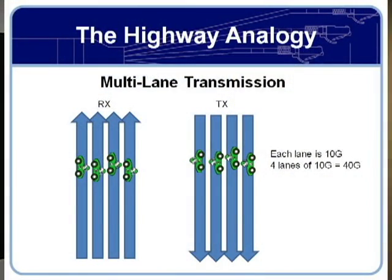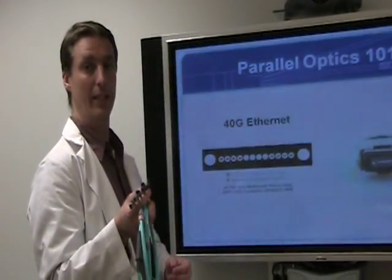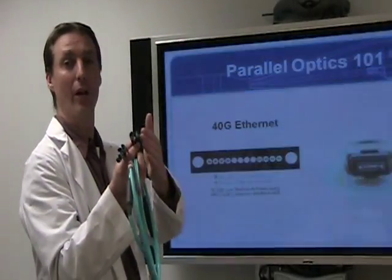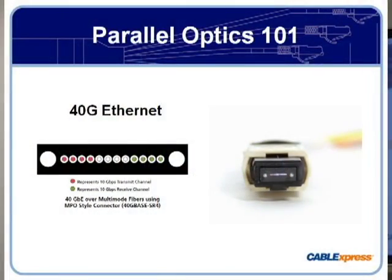So back to the highway analogy. Here we have a visual of 40 gigabit ethernet — each lane that you see is 10 gigabit. Four lanes of 10 gigabit equal 40 gigabit. You have transmit and you have receive, both at 40 gigabit. Here's a visual representation of the front of the MTP connector. The red dots represent 10 gigabit transmit channels on the outer side, and the green would be your receive.